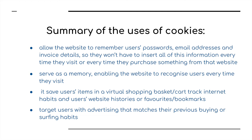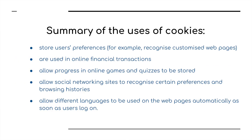Cookies target users with advertising that matches their previous buying patterns or surfing habits. They store users' preferences — for example, recognizing customized web pages, such as a colour scheme somebody may have selected for a social media site. Cookies are used in online financial transactions, allow progress in online games and quizzes to be stored so your place is remembered next time, allow social networking sites to recognize preferences and browsing histories, and allow different languages to be used on web pages automatically.